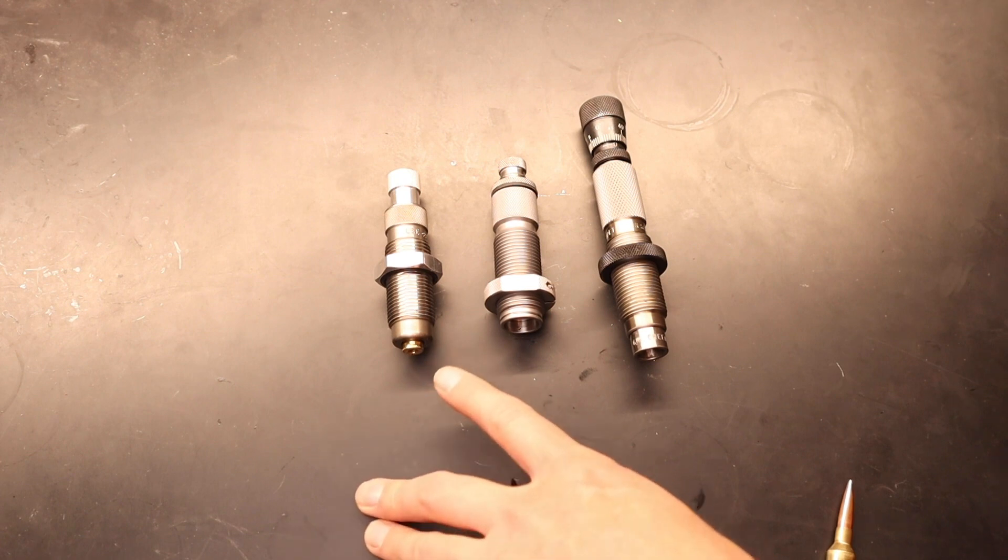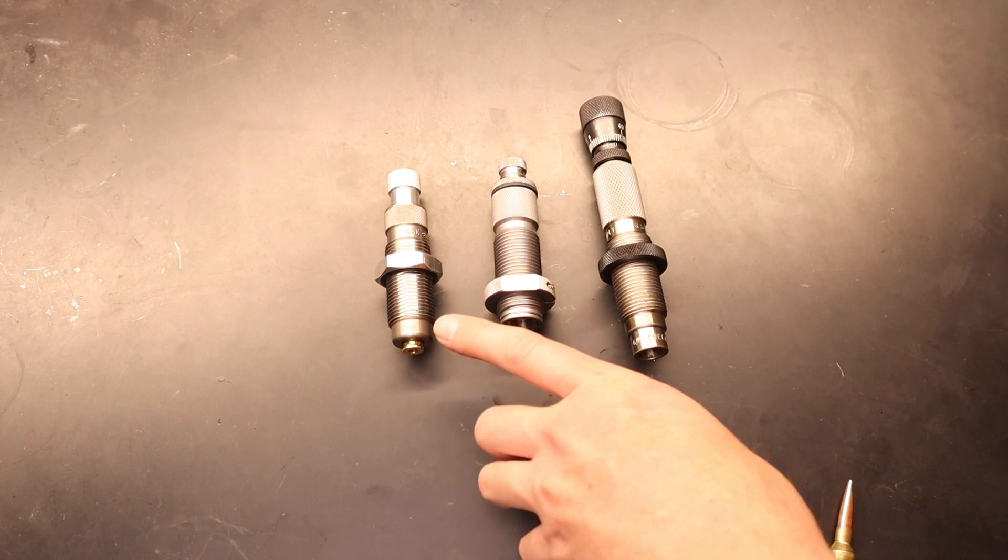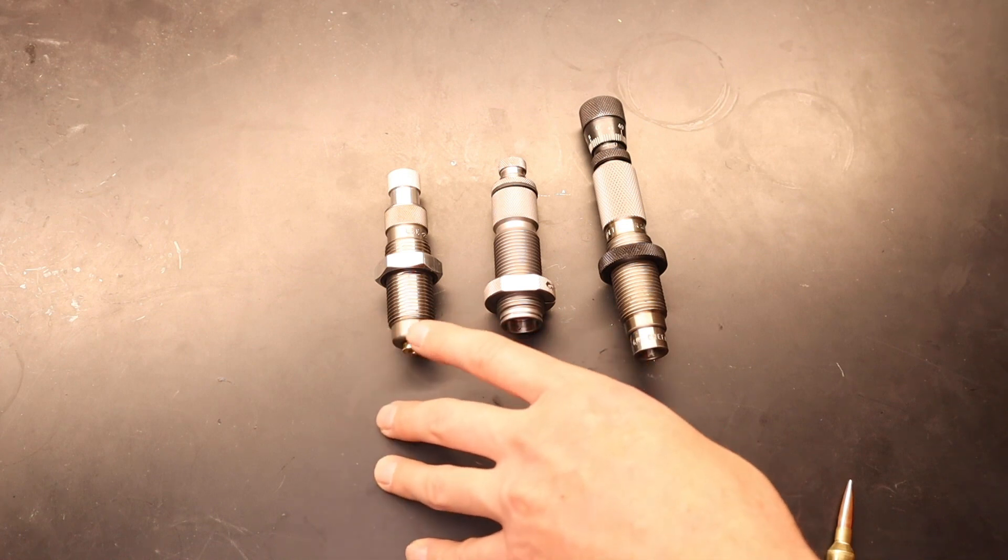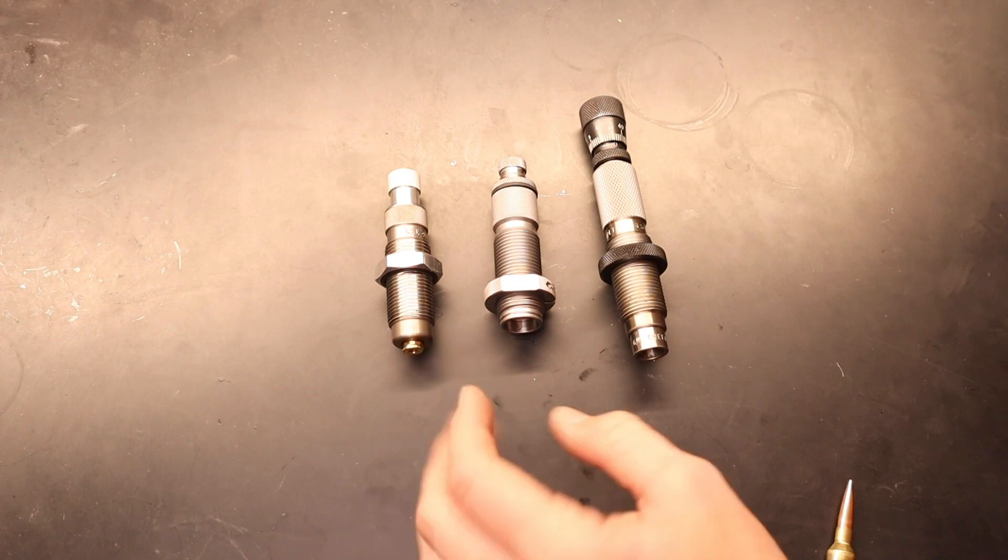So the Lee dies I've used for 6.5 Creedmoor and got really good results with. It is super consistent on how long it seats them. I found that there's just not much flex or anything in this. So super consistent seating depth. As well as I like that the chamber holds it straight.